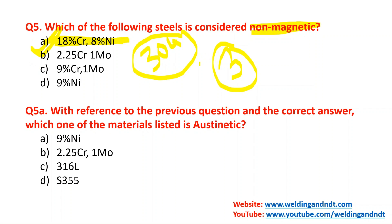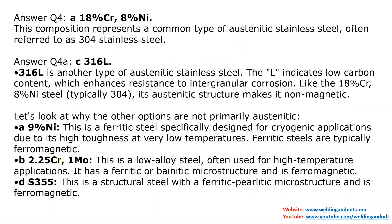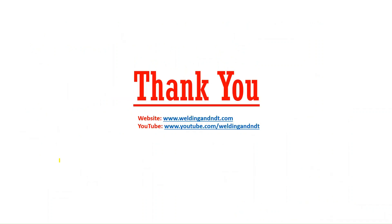With reference to the previous question, the correct answer being 18% chrome and 8% nickel — which of the materials listed is austenitic? As mentioned, austenitic stainless steel names start with 3, so S316L is an austenitic stainless steel. The explanation is provided on screen. That brings us to the end of today's video — hope you liked it, thank you very much.